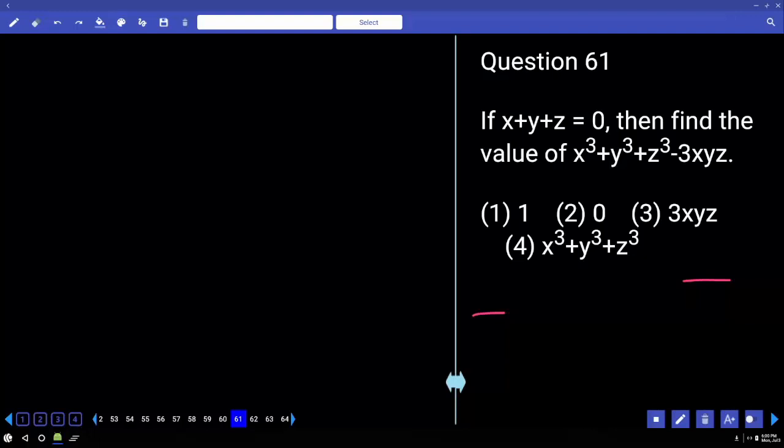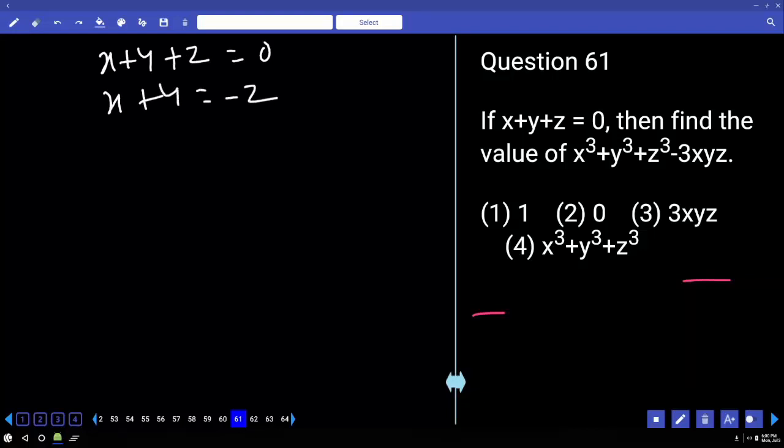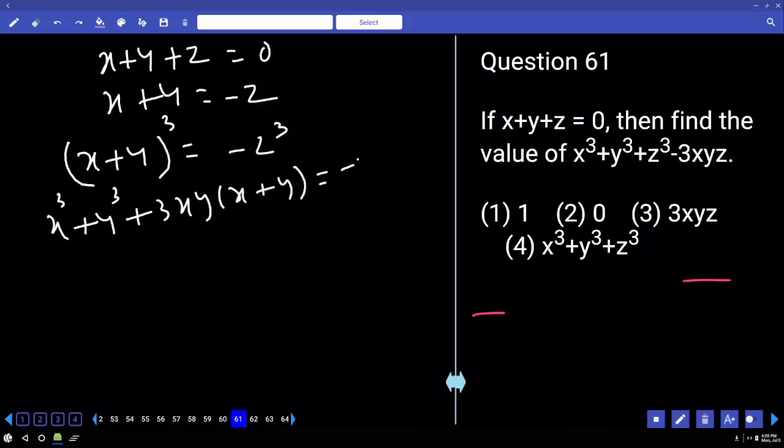x plus y plus z is equal to 0. x plus y is equal to how much? Minus z. Cubing on both sides. x plus y whole cube equal to minus z cube. x cube plus y cube plus 3xy into x plus y equal to minus z cube. x cube plus y cube minus 3xyz is equal to z cube. Or x cube plus y cube plus z cube is equal to 3xyz.